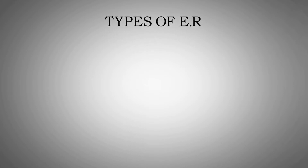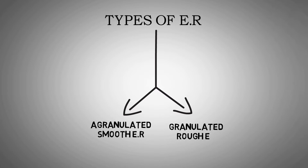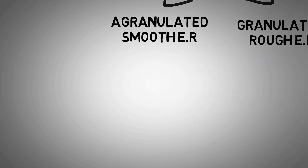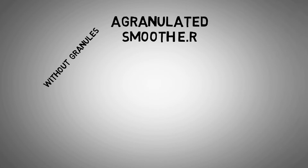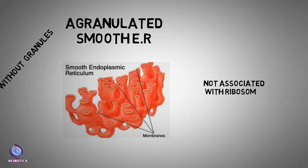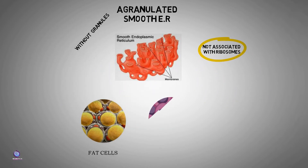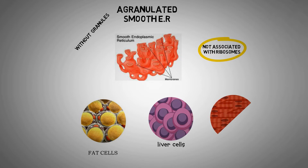There are two types of endoplasmic reticulum: agranulated or smooth endoplasmic reticulum, and granulated or rough endoplasmic reticulum. The word agranulated means without granules. They are not associated with ribosomes, hence they are called agranulated endoplasmic reticulum. They are found in fat cells, glycogen-storing cells or liver cells, and muscle cells.